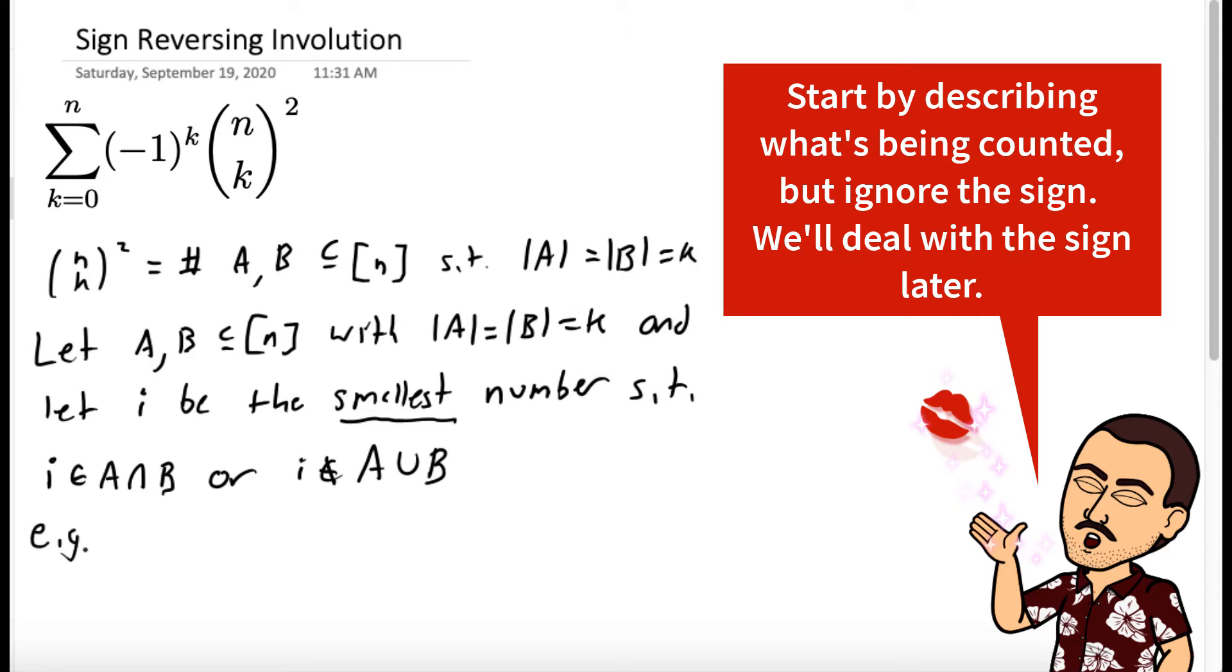Just for example, so we could see this, if n equals 5, and A equals the set 1, 4, 5, and B equals the set 2, 3, 4, well, i is the smallest number that's either in both or in neither, and so we can see that i equals 4 in this case.